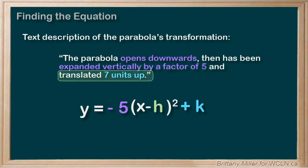Translated 7 units up means that k is positive 7. It doesn't say anything about h, so we can assume that h is 0. That makes our equation negative 5x squared plus 7.